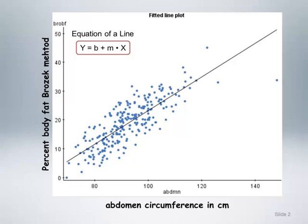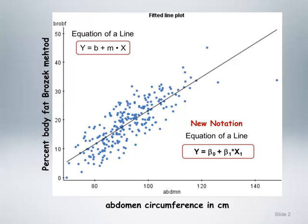Previously, we discussed using simple linear regression to predict percentage body fat using abdomen circumference. Here we have the fitted regression line superimposed on the scatterplot diagram. We discussed the equation of a line and that the least squares method is used to determine the estimated values of the intercept denoted as B and slope denoted as M in the population that best predicts Y from X. Before moving on to discuss logistic regression, I want to introduce new notation for the intercept and slope that is more generally used in textbooks and the literature to describe independent variables in a regression model. For the rest of the course, we will use beta notation.